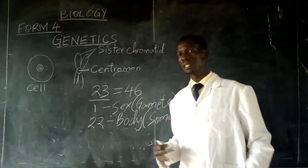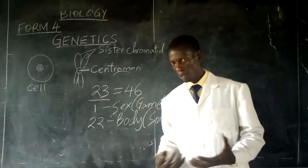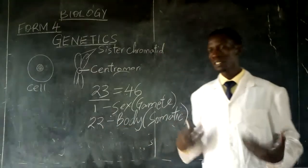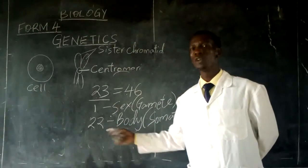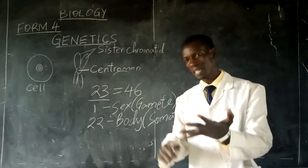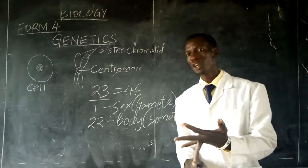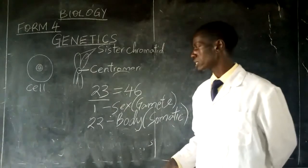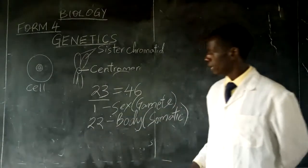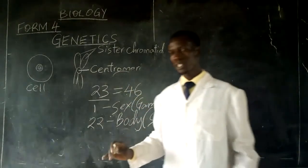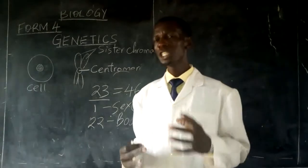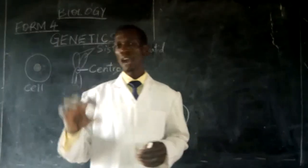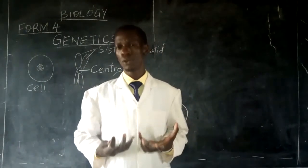The 22 remaining pairs of somatic chromosomes are the ones that determine other body characteristics, such as body size, weight, skin color, and behavioral factors, among others. During the process of reproduction, each parent gives out a gamete which comprises half the number of chromosomes required in the body.